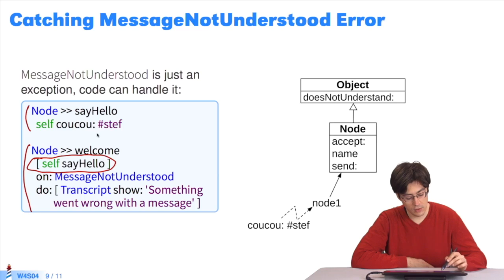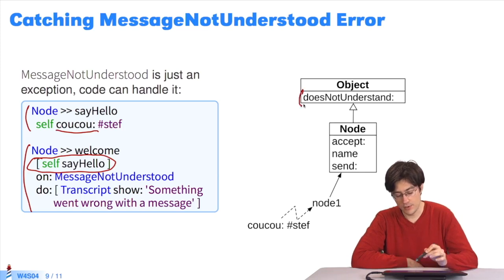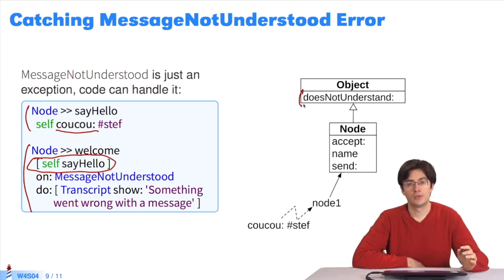Here, sayHello sends a cuckoo message to self. Cuckoo is still unimplemented. Ultimately, the doesNotUnderstand method will be executed.